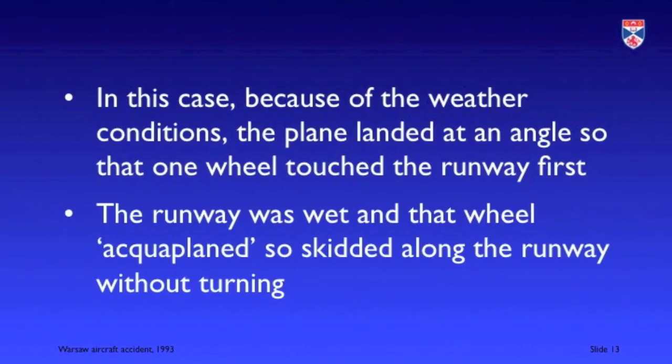In this case, the pilots were told there was a crosswind — the wind blowing across the runway. Under those conditions the plane landed on a single wheel; there was not weight on both wheels. Furthermore, because of heavy rain and a build-up of water on the runway, the plane aquaplaned — it skidded along the runway rather than the wheels turning — so that indicator did not show the plane was on the ground. The software therefore did not allow the brakes to be deployed.